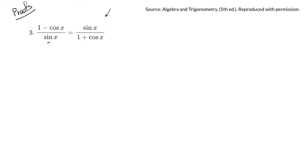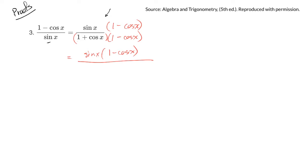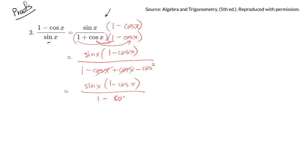One thing you could do is multiply by the conjugate. We've done that when simplifying with radicals, and with complex numbers, but you can do it any time to see if you can simplify. On the top I'll leave that in factored form, but on the bottom I'll FOIL it out: 1 times 1 is 1, 1 times minus cos gives minus cos x, cos times 1 gives plus cos x — those cancel — and this times this gives minus cos squared. So on top I have sin x times (1 minus cos x), and on the bottom I have 1 minus cos squared x.